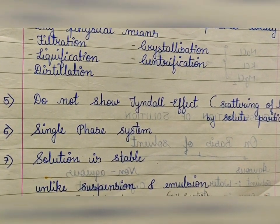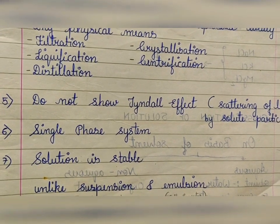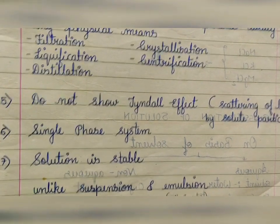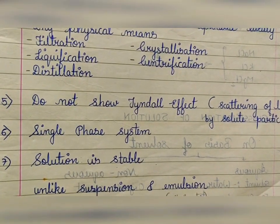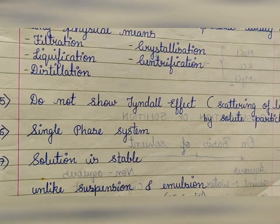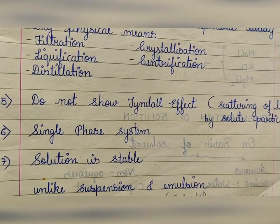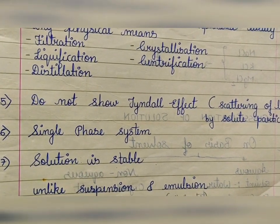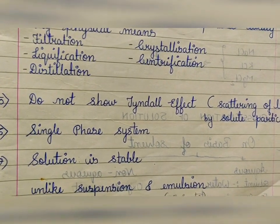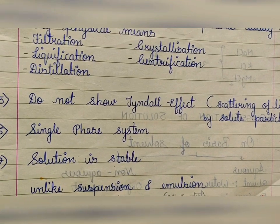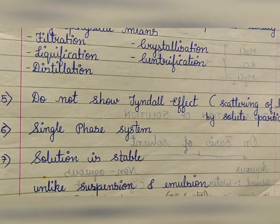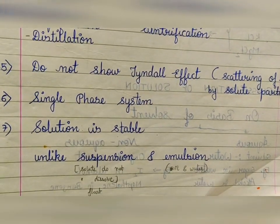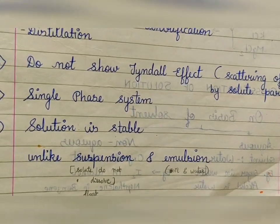Or take sand in water — after some time, sand will settle down. That is a suspension. Emulsion is oil in water — two different states. But a solution like sugar in water or salt in water is stable, unlike suspension and emulsion.